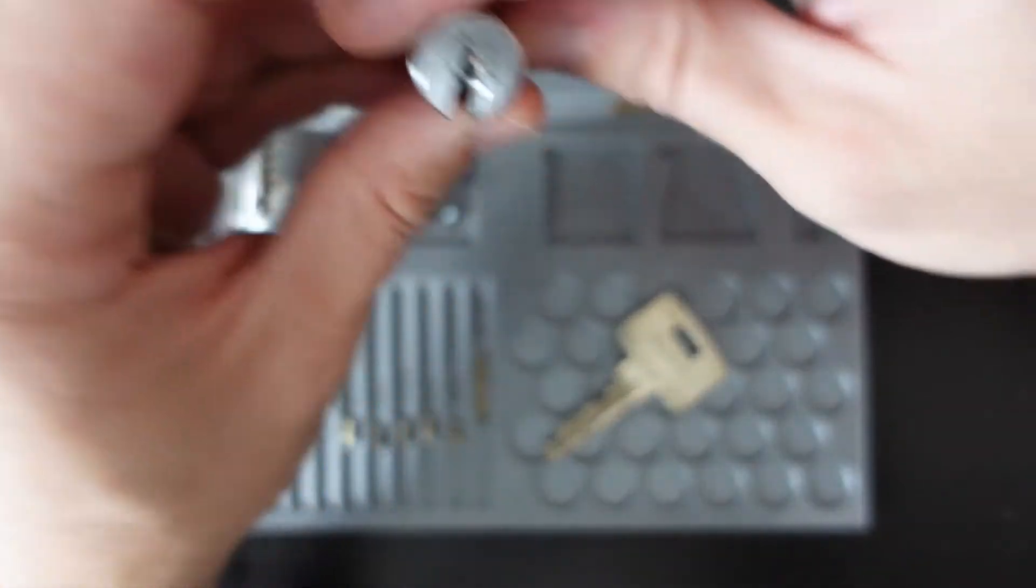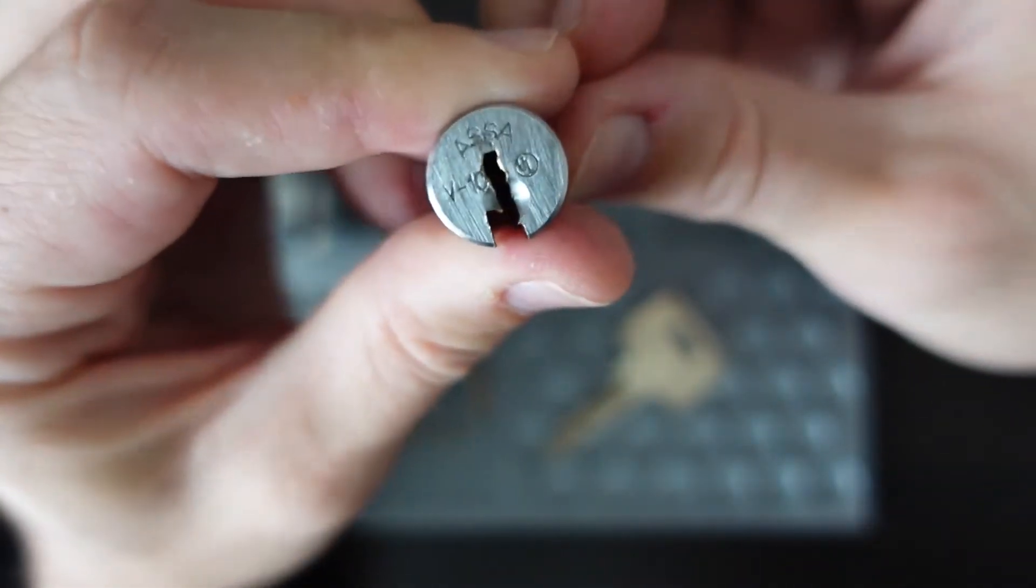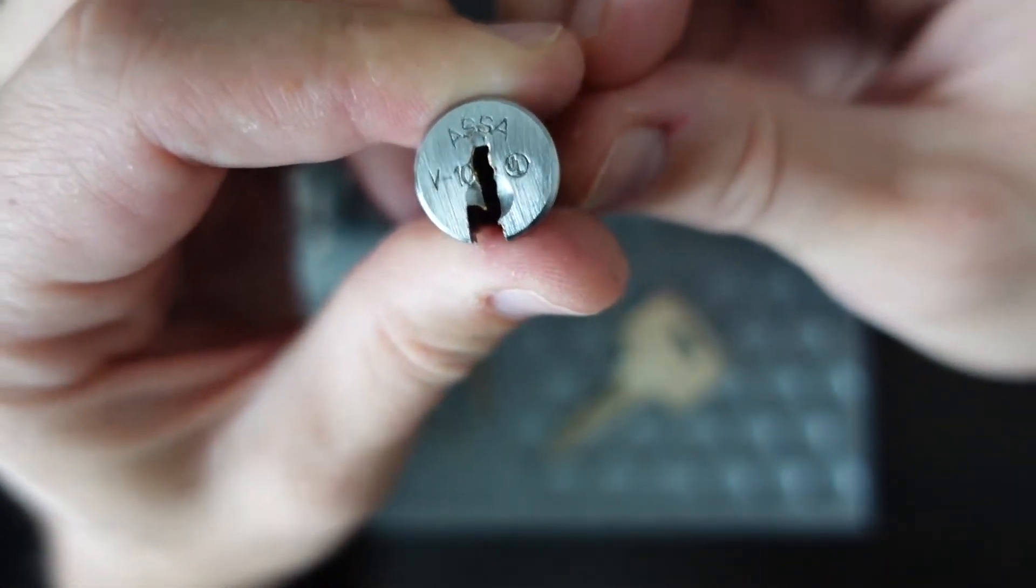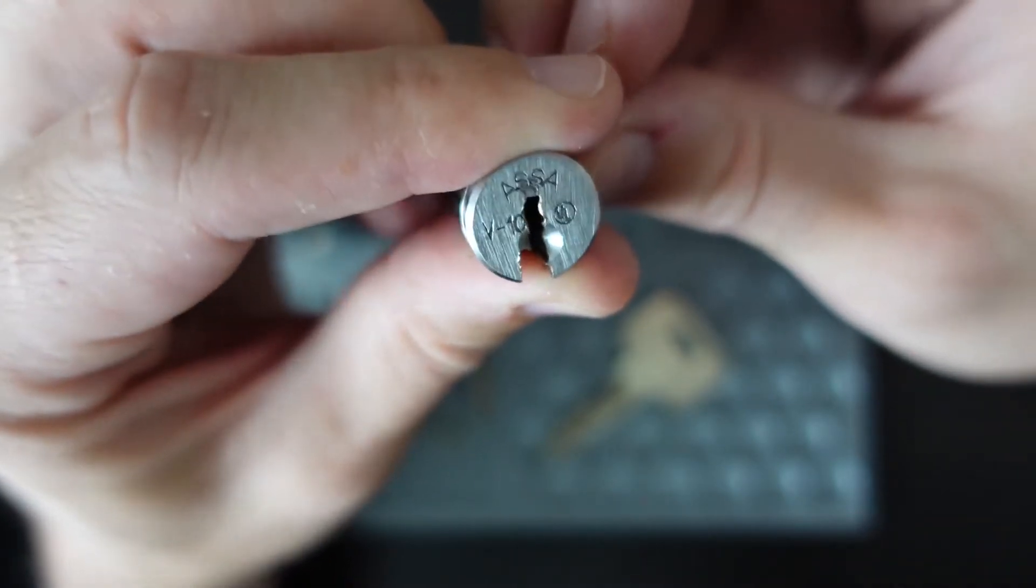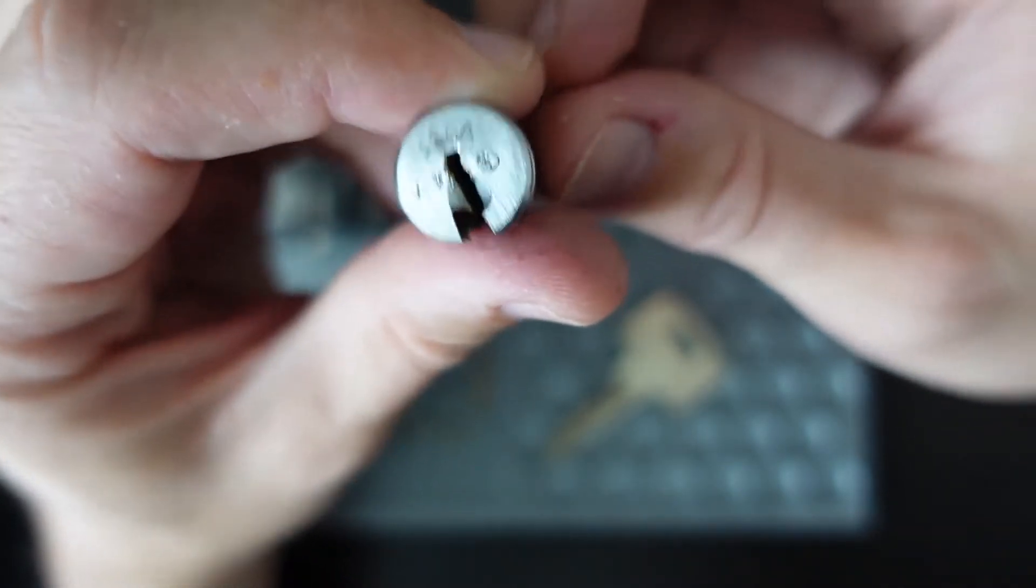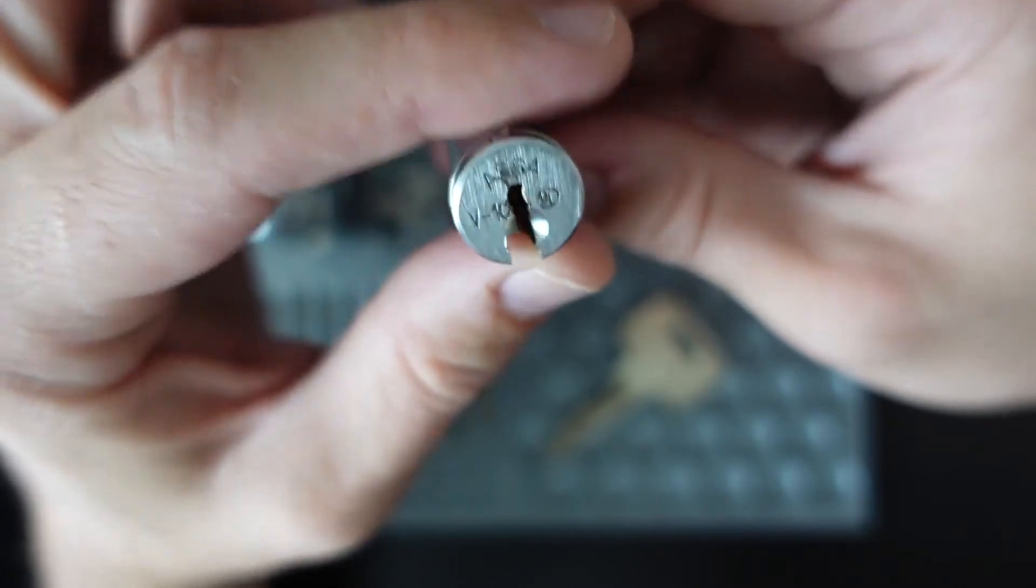In the plug we can see that the keyway looks a bit different than the Twin 6k. It's a little bit more restrictive I would say, but still you can use 18,000 hooks just fine.